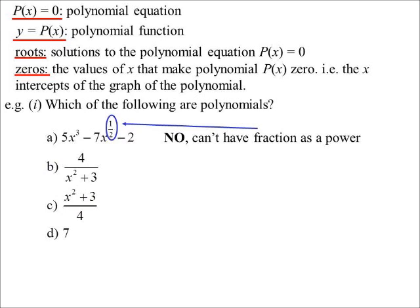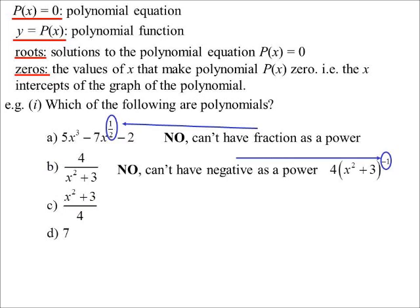Okay. What about B? B? Hands up. B for polynomial. Oh, no hands. But I've got a power for the X, so why not? Negative. Right. It's on the bottom of the fraction. Can't have negative as a power. And really, if you think about it, it's 4X squared plus... Not that you can expand out the X squared plus 3 to the negative 1, but you've got that negative power.